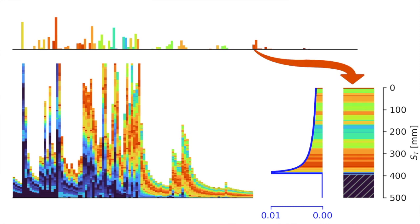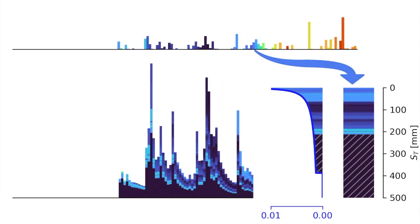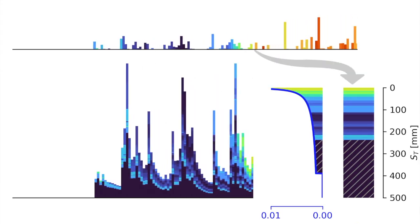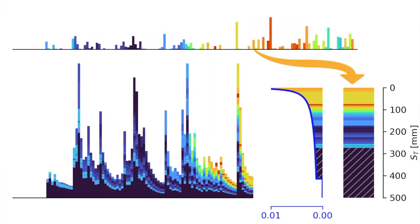SAS allows us to characterize more complex types of transport, like that one shown here. In many cases of interest to hydrologists like me, the SAS function is skewed the other way, showing a preference for younger water, like this.